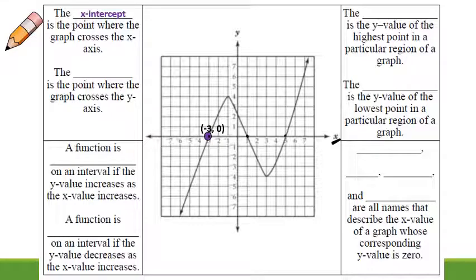So in this case we have an x-intercept at negative three zero, one zero, and five zero. So you'll notice that each of those has a number followed by the value of zero. That'll always happen for the x-intercept because it'll always be on the x-axis.